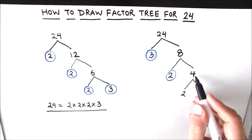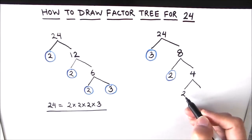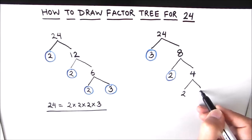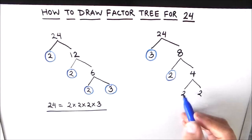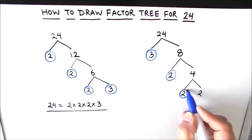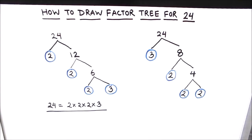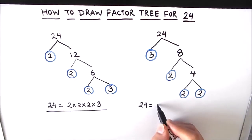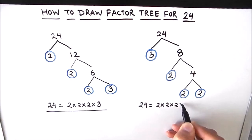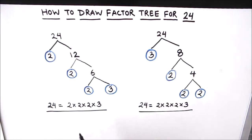Our path ends at the circled 2, and now 4 can be broken down into two factors. As 4 is an even number, 2 is one of the factors, and 2 times 2 is 4. Both 2 and 2 are prime numbers, so we circle both. Our path ends here and our tree is complete — all the circled numbers are at the lower level.